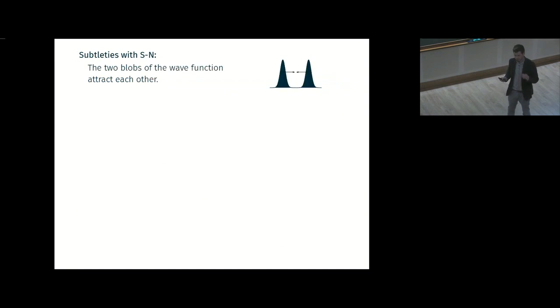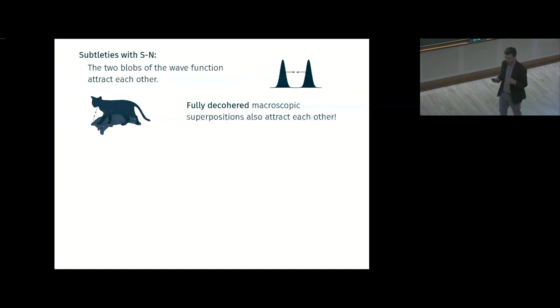What I would like to say is that, as simple as Schrödinger-Newton seems, it's not so trivial. You have many subtleties. The first one is not a subtlety, it's what you would intuitively have. If you have a wave function of a single particle with two blobs, they attract each other. That's pretty natural from the equation. Something which is more subtle is that if you have fully decohered superposition, say Schrödinger cat, they still attract each other. That's more puzzling.